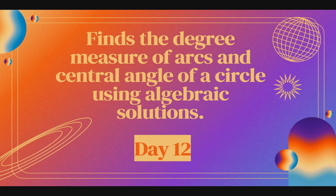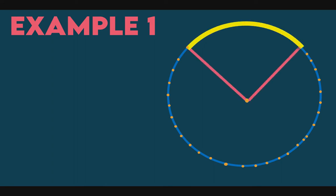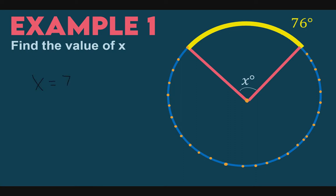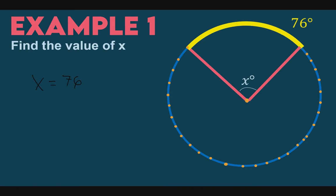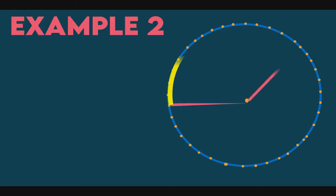Now, find the degree measure of arcs and central angles of a circle using algebraic solution. Just remember that the central angle and its intercepted arc are equal. Find the value of X. This is basic because we know the central angle equals the intercepted arc. So the value of X here is 76 — 76 degrees.